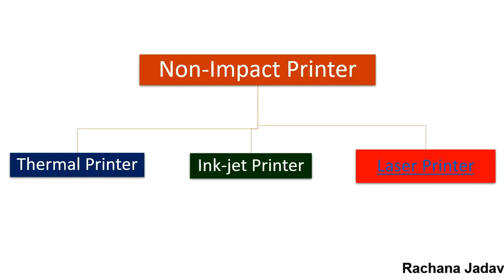Non-impact printers include thermal printer, inkjet printer, and laser printer. The inkjet printer works on ink and ink droplets — the printout is made using ink droplets, so you have to handle it with care. The laser printer gives very good quality output and can be used for printing certificates and photos.